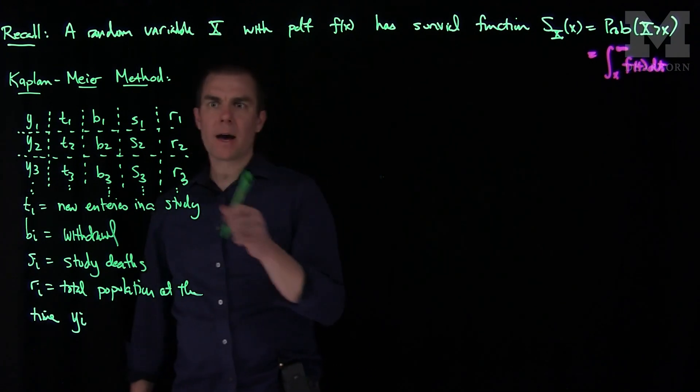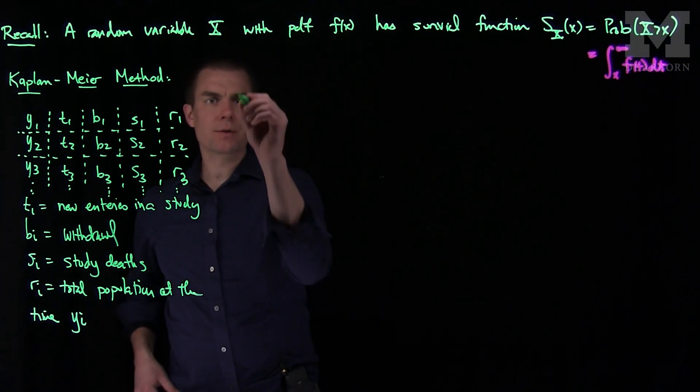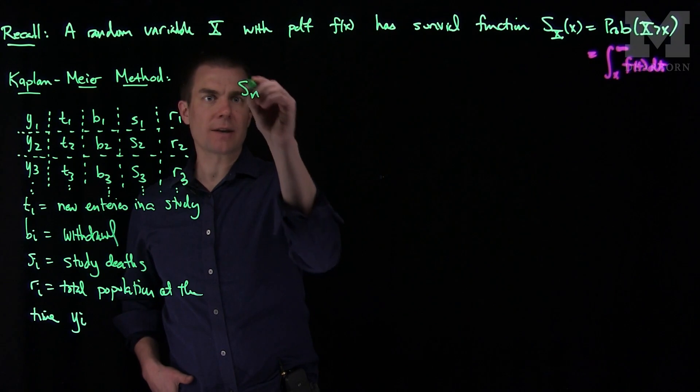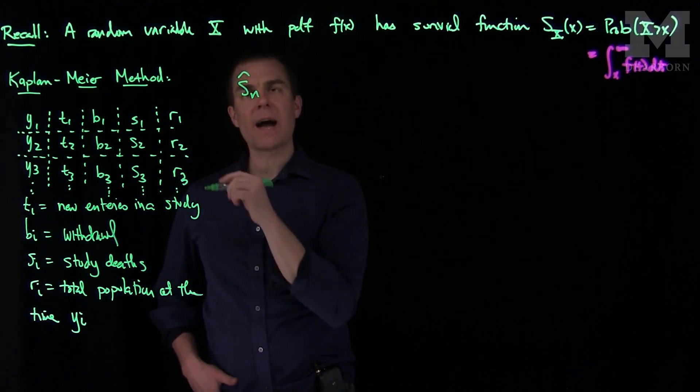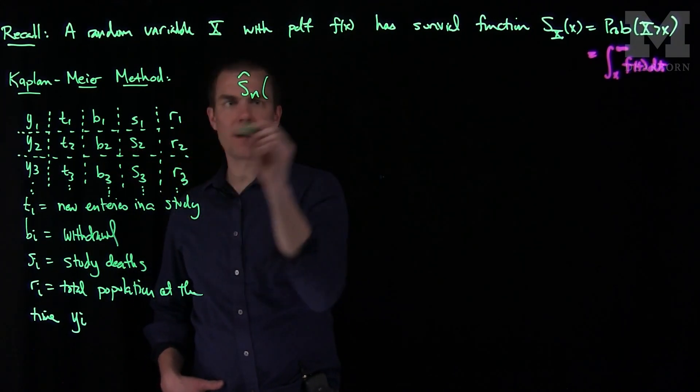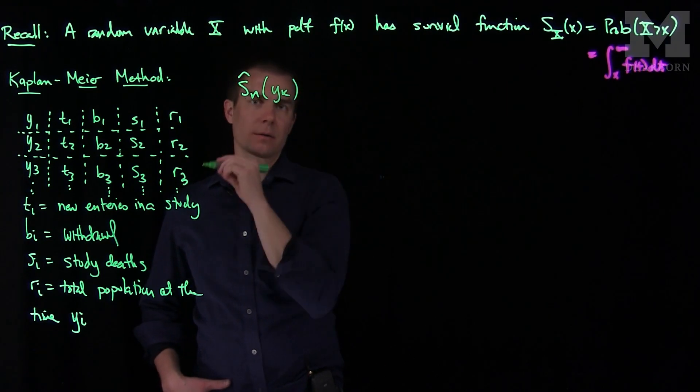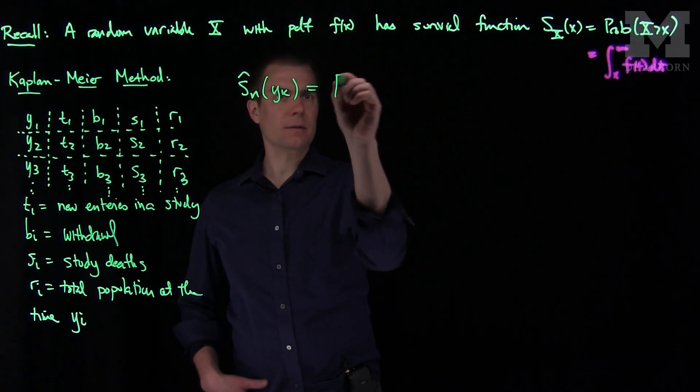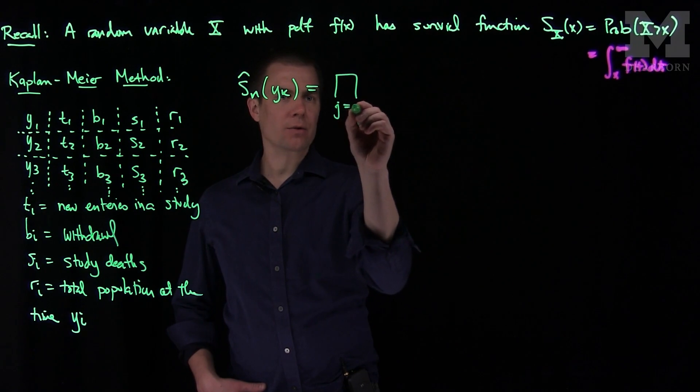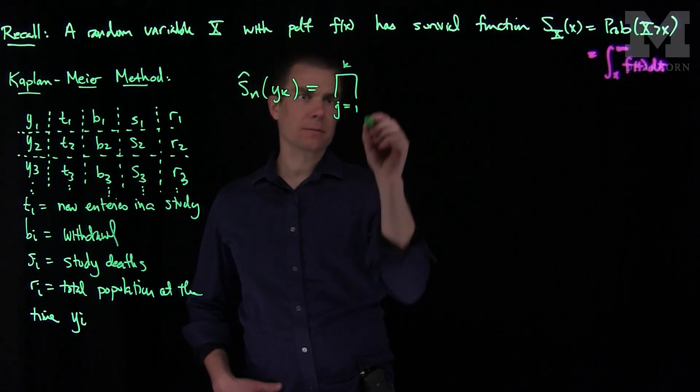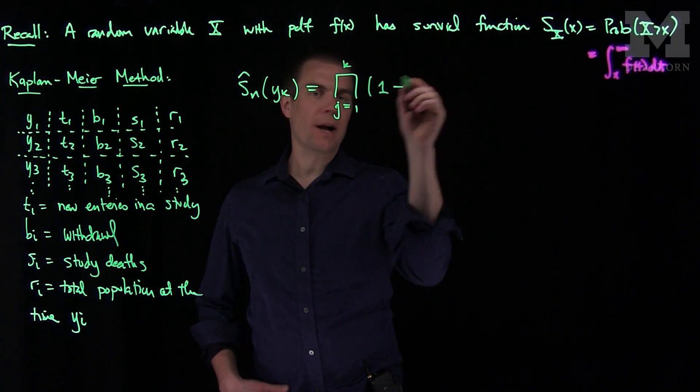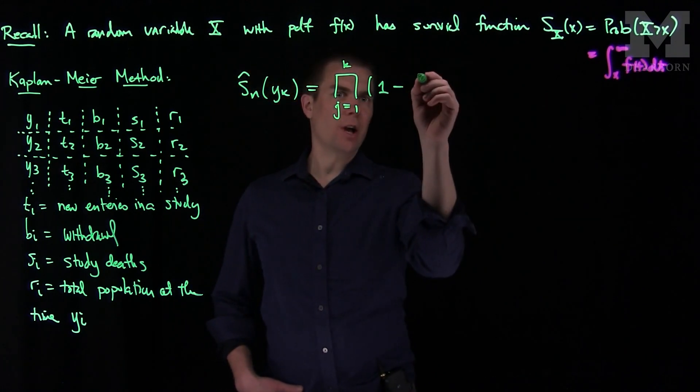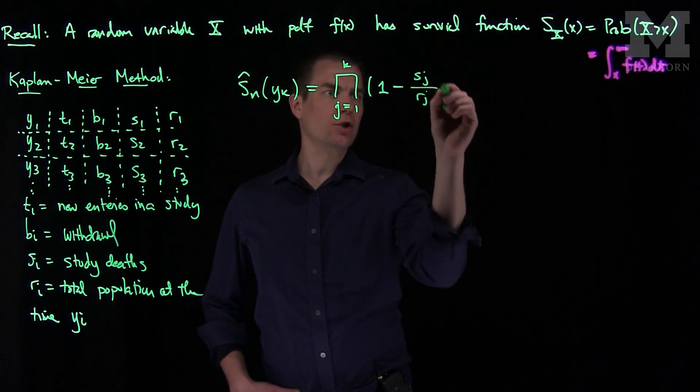What the Kaplan-Meier estimate for the survival function is, it says the survival function S_n estimate, we're using the hat to denote estimate here, at a point in time y_k will be the product, j goes from 1 to k, of (1 - s_j/r_j).